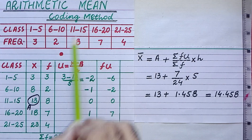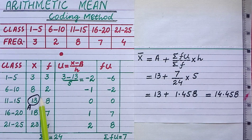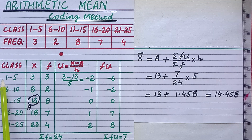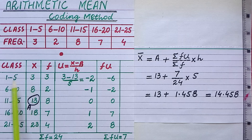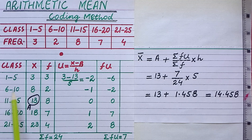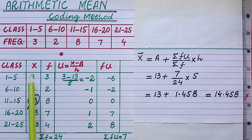We take this grouped data and first add the column of class mark x. To find the class mark x of a class, we divide the sum of its limits by 2. For the first class, the sum of limits is 6, divided by 2 gives 3. For the second class, sum of limits is 16, divided by 2 gives 8.